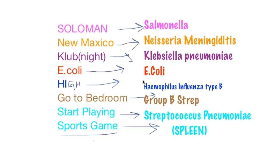E. Kolai the chick which is E. Coli, HI which is Haemophilus influenzae type B. They go to bedroom which is Group B Strep, they start playing, Strep pneumo.